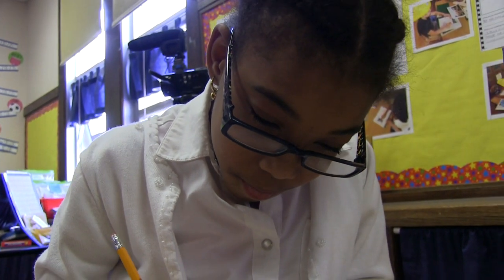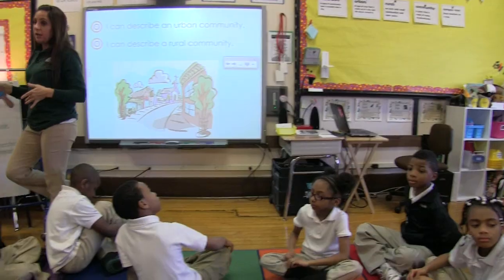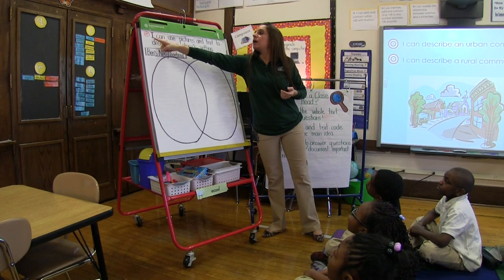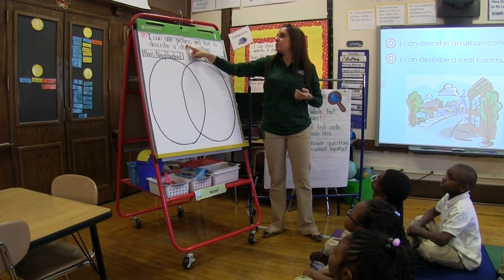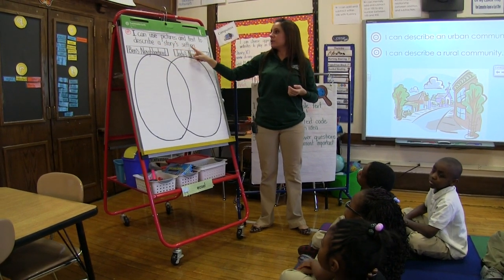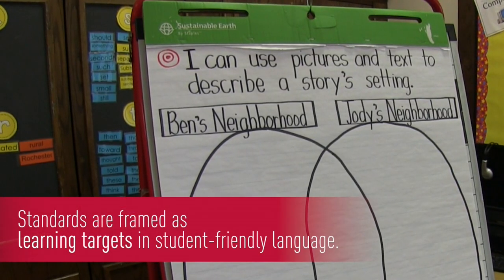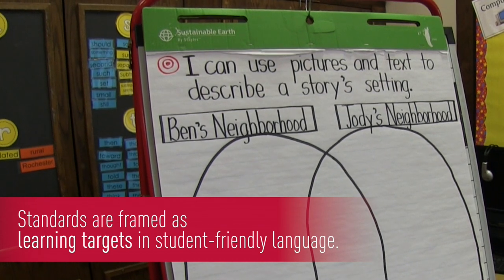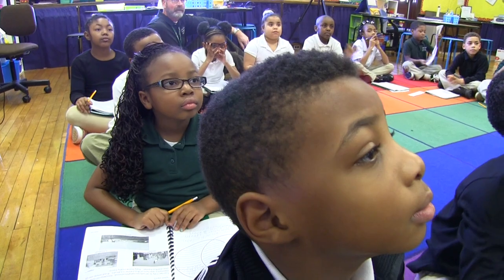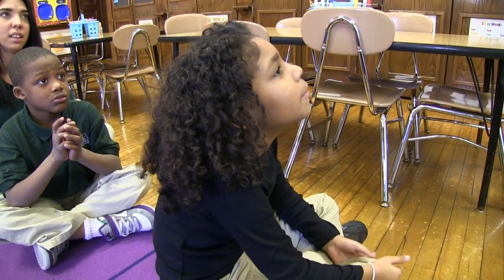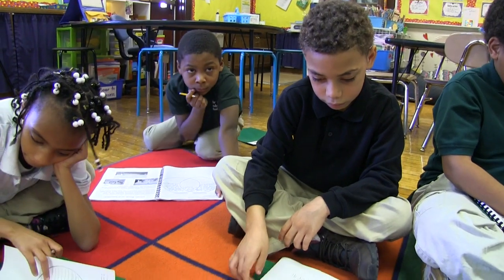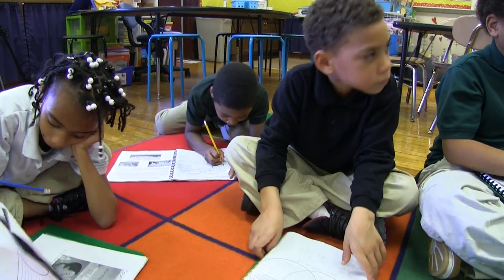We're going to make sure that we're looking at our learning target and reading for a purpose. We're going to be working on a lot of literacy standards throughout this expedition. The literacy standard we focus on in this particular lesson is: I can use pictures and text to describe character, setting, and plot. Another standard students will work on today is using different strategies to make meaning for unfamiliar words.